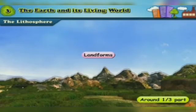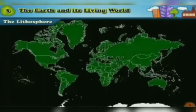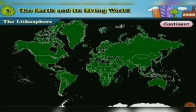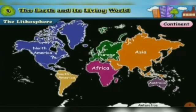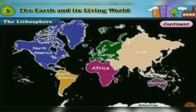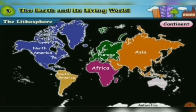Around one third part of the earth's surface is occupied by land. The vast continuous stretch of land is known as a continent. All the land on the earth is not continuous — it is divided into seven continents. Look at this map. The seven continents are Africa, South America, North America, Antarctica, Asia, Australia and Europe. Asia is the largest continent whereas Australia is the smallest continent.